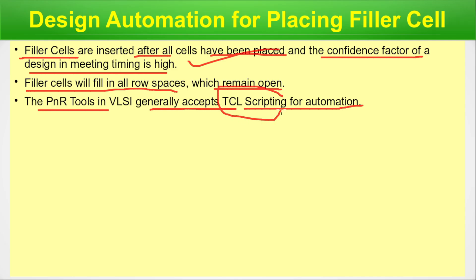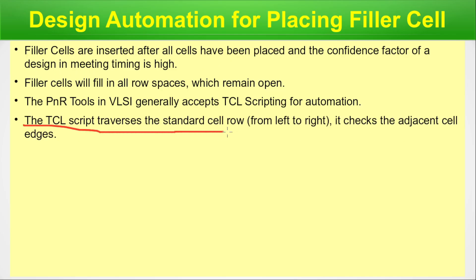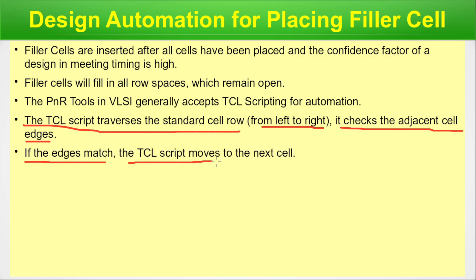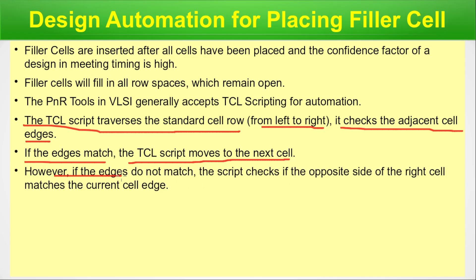The PNR tools in VLSI generally accept TCL scripting for automation, or they may have some proprietary scripting language. In either case you will get proper training on the APIs used for automation. The TCL script traverses the standard cell row from left to right and checks the adjacent cell edges — since cells are butted to each other, it checks those edges. If the edges match, the script moves to the next cell. However, if the edges do not match, the script checks the opposite side of the right cell and matches with the current cell edge to verify that butting is done properly.